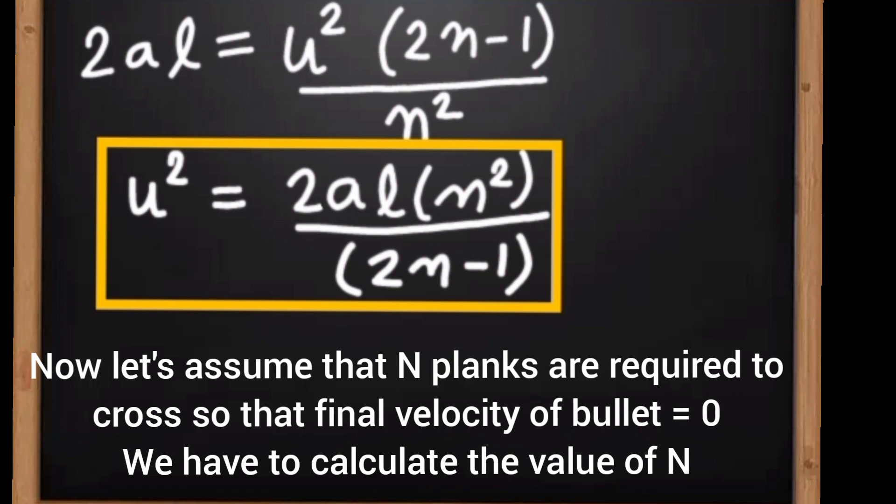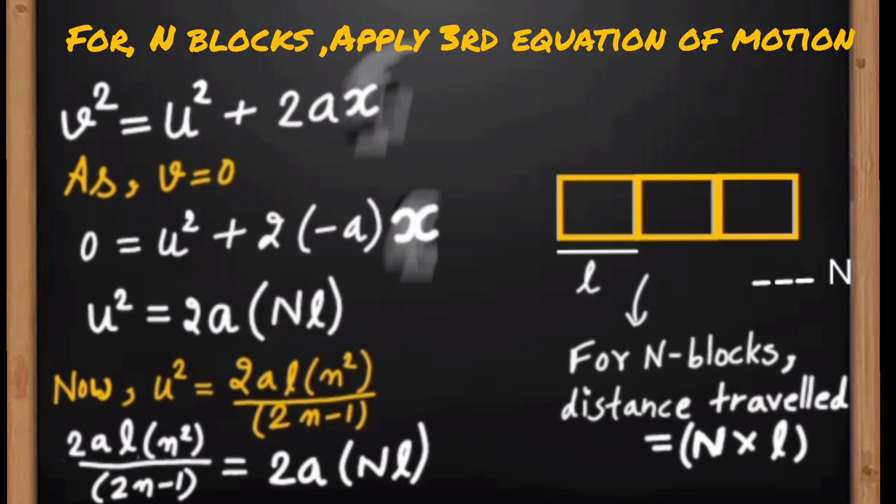We have already calculated initial velocity and final velocity. Now the distance traveled by the bullet will be N times l, where N is the number of blocks.